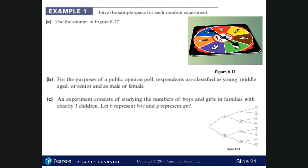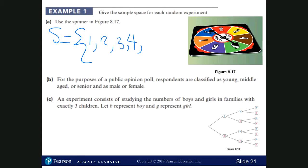For Example 1, we're going to find only the sample space — we're not calculating probabilities yet. Using the spinner from Figure 8.17, the sample space will be the numbers 1, 2, 3, 4, 5, 6, and 7.